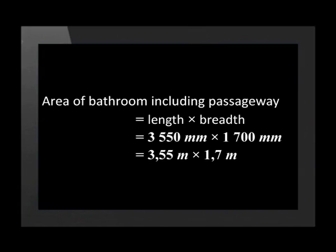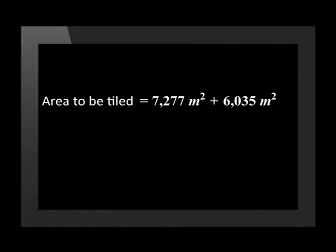The area of the bathroom and passageway is calculated by multiplying the length by the breadth: 3,55 metres by 1,7 metres, giving 6,035 metres squared. Now we need to add the two areas together. The area to be tiled is 7,277 plus 6,035 metres squared, which equals 13,312 metres squared. We round this up to 14 metres squared.